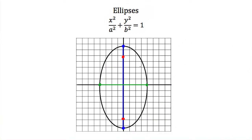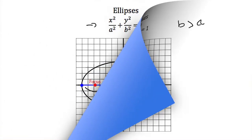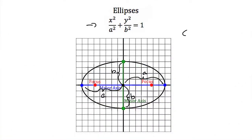If the ellipse is stretched in the other direction, the a-squared term is still underneath the x, so the x-distances from center are still a. The b term is still underneath the y, so the y-distances from center are still b. In this case, b is greater than a, so the major axis is in the y-direction. In the previous example, a is greater than b, so the major axis was in the x-direction.